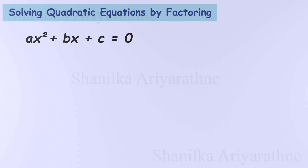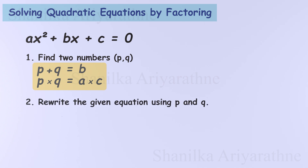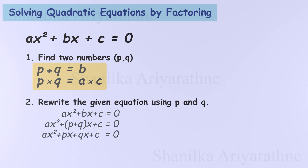Factoring works well for simpler quadratic equations, but it takes a bit of practice. The idea is to find two numbers, p and q, that satisfy two conditions: they add up to the middle coefficient b, and they multiply to give the product of the first and last coefficients, a times c. Once we find p and q, we can rewrite the equation and break it into factors to solve for x easily.